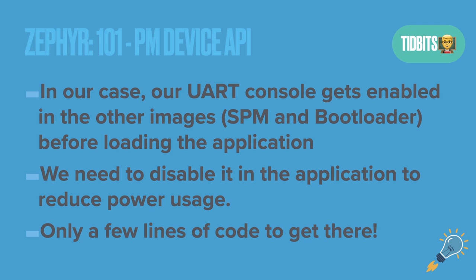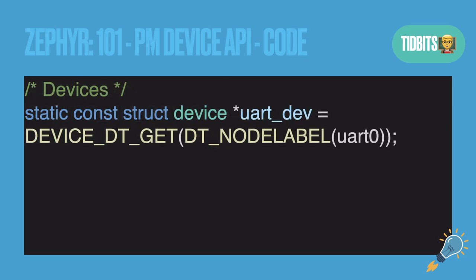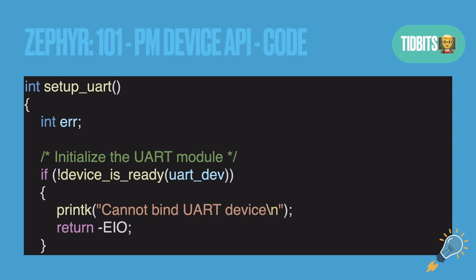In only a few lines of code, as we'll see, you can reduce your power usage by a factor of four. Here's the configuration — you have the Power Management Device API enabled along with power management in general. The first thing we're doing in the code is getting the device. We're using UART0 in this example, getting it through the device DT get macro — pretty standard stuff.